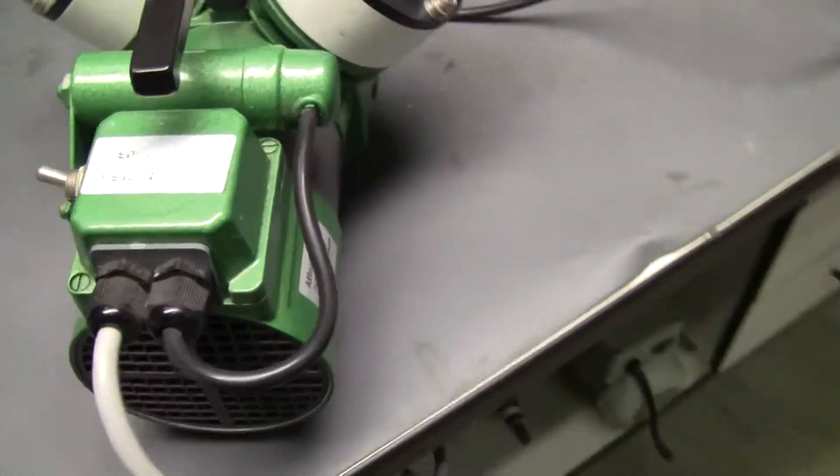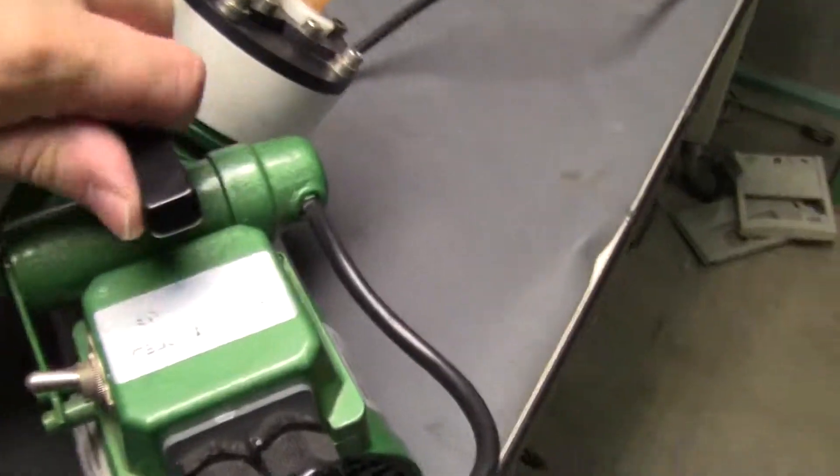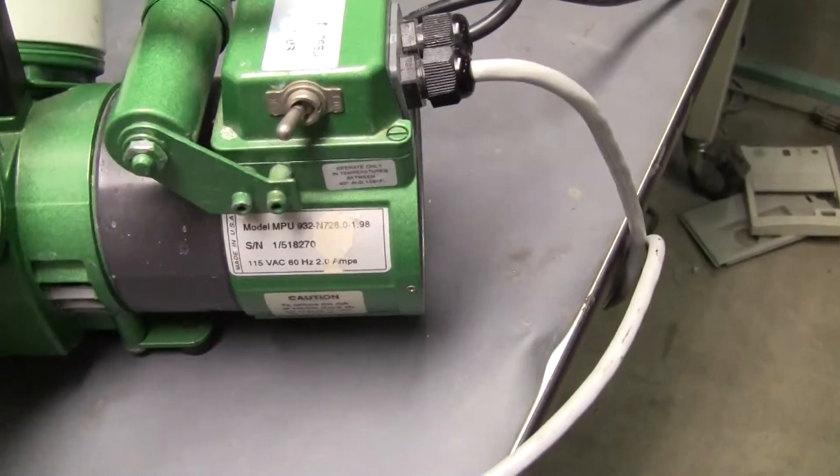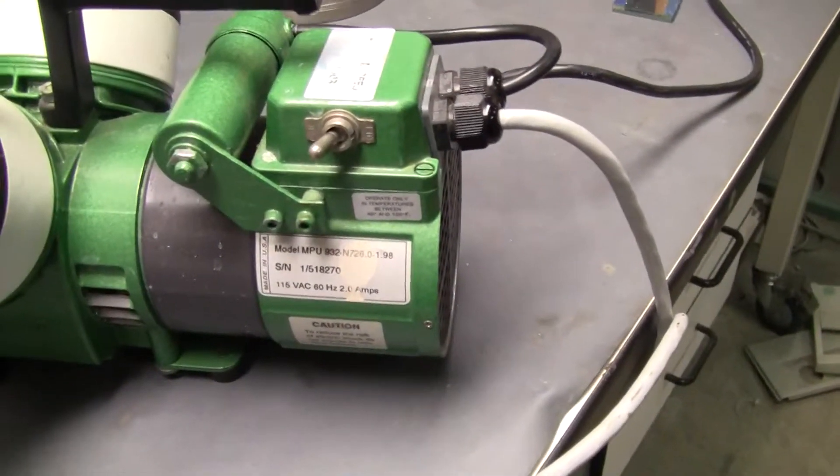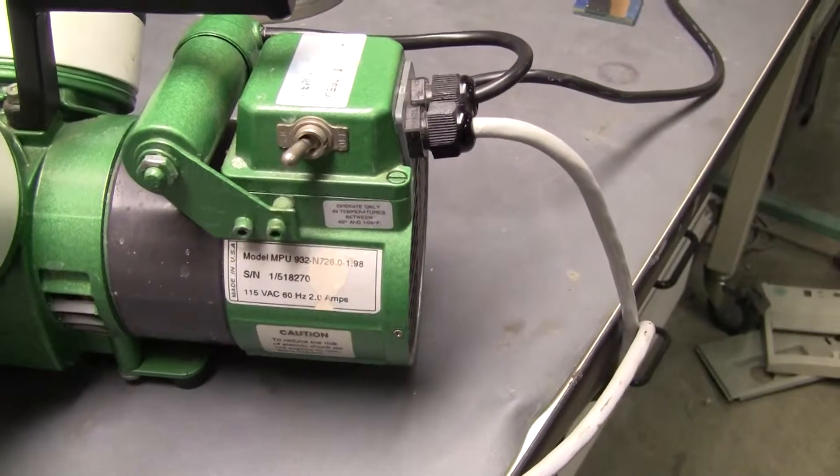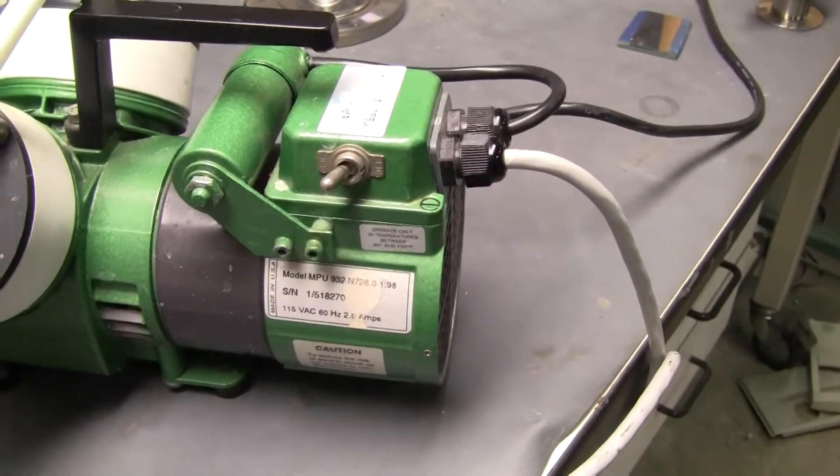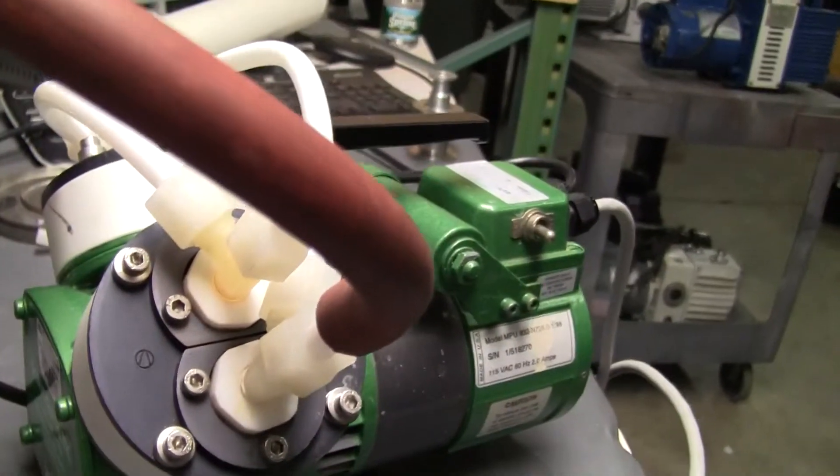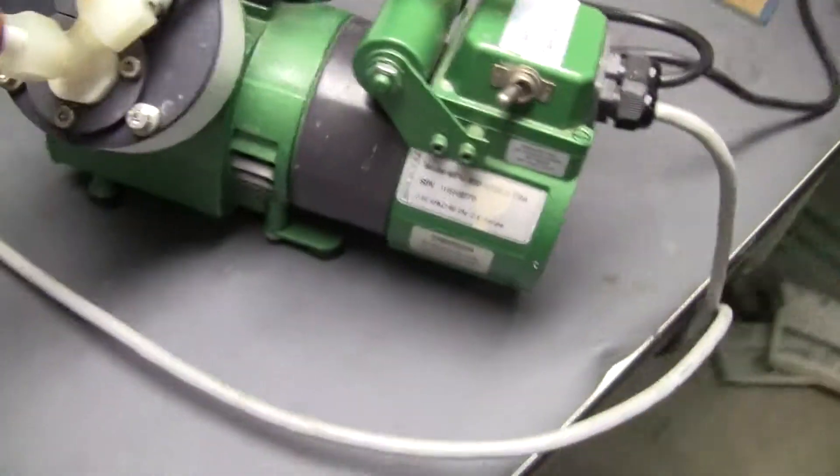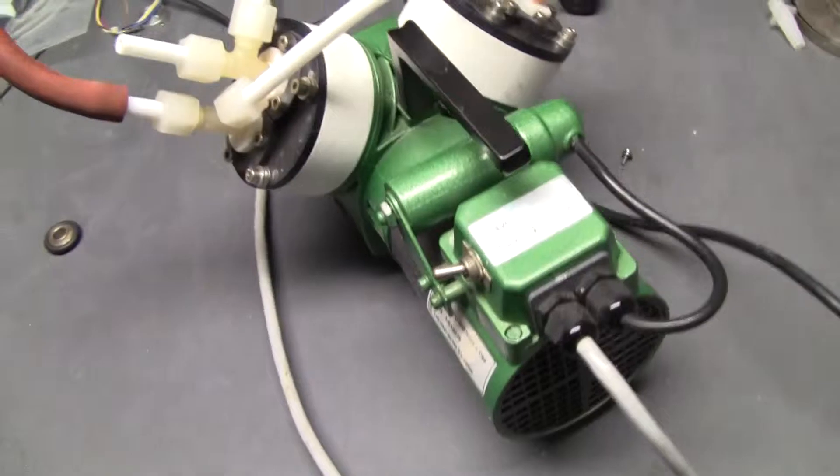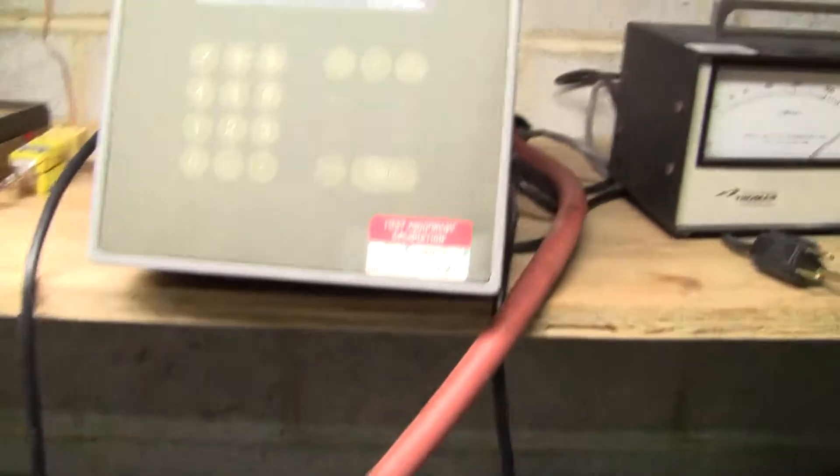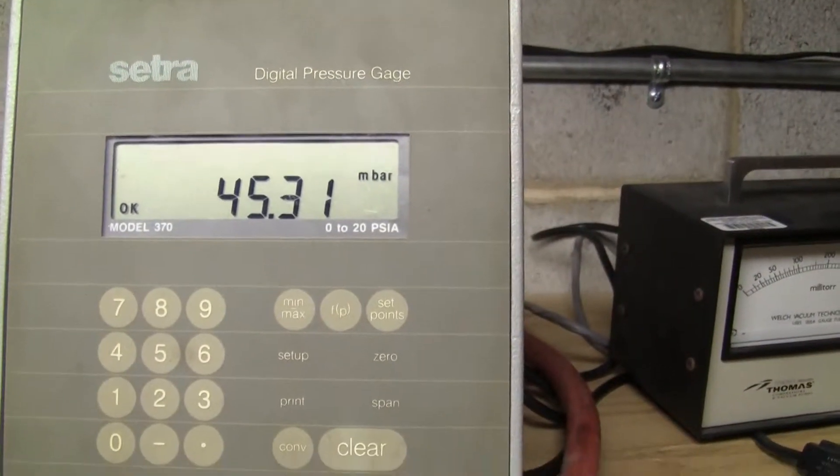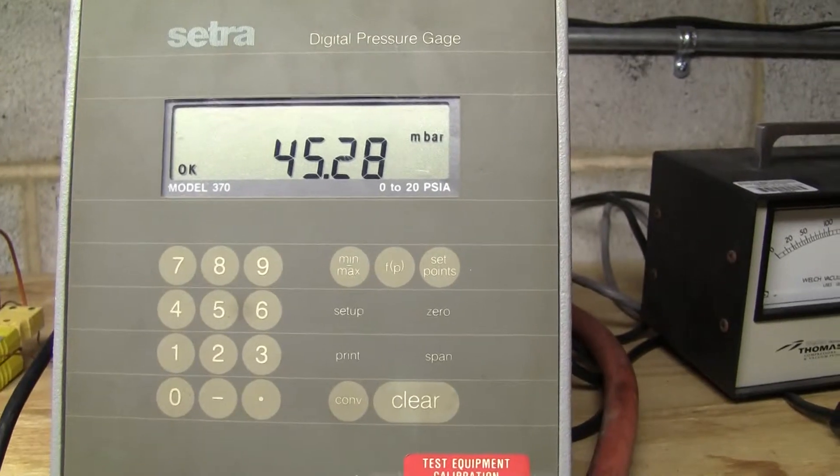Coming right along. The particular model is an MPU-932-N26-198. This is a dual diaphragm Teflon vacuum pump. Very nice, used for rotavap. This particular pump right now is pulling down just around 45 millibar, which is within specification.